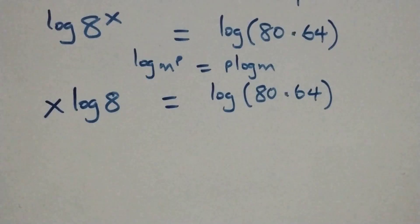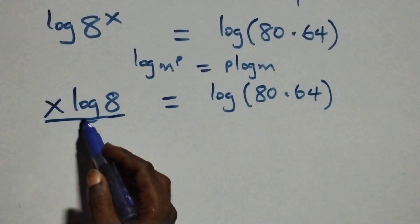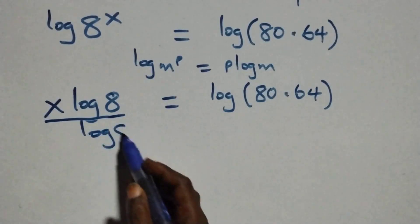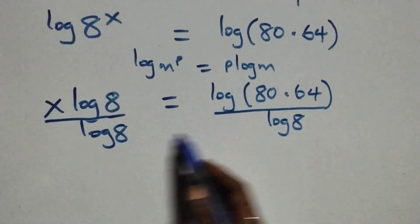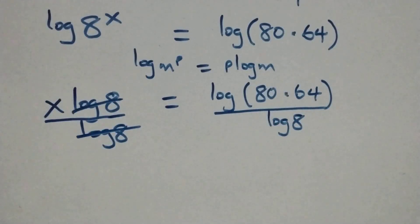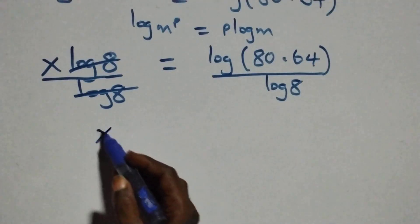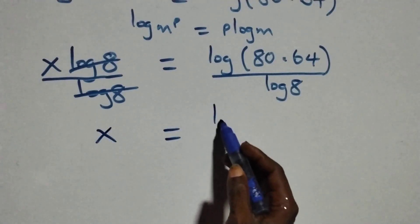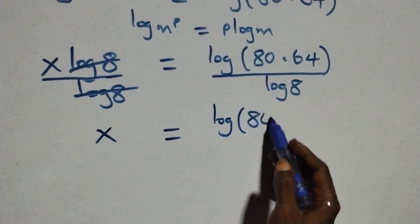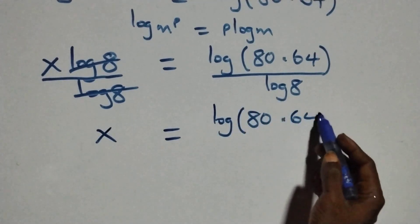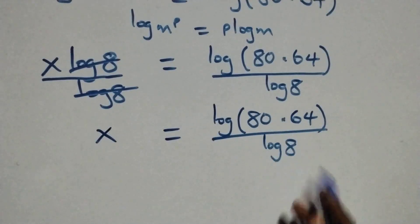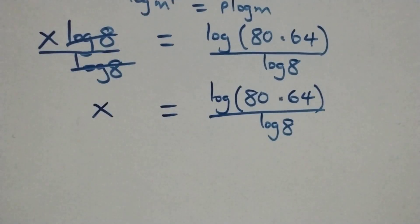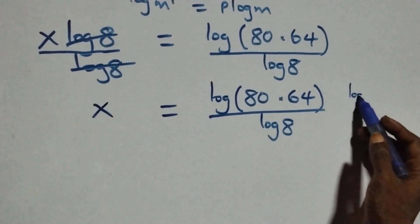Next step, we divide both sides by log 8. Log 8 cancels on the left side, and we have x equals log of 80 times 64 over log 8.